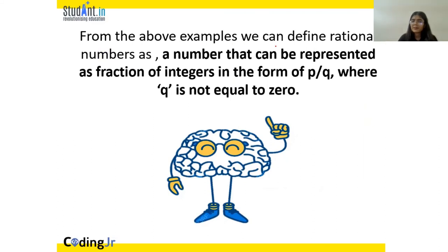So, from above examples, we can define rational numbers as numbers that can be represented as fractions of integers in the form P by Q where Q is not equal to 0. So, any number that can be represented in the form P by Q. Let's say I take 1 and 2 as my integers. So, 1 by 2, is this a rational number? Yes, it is of the form P by Q and 2 is not 0. So, yes, it is a rational number.